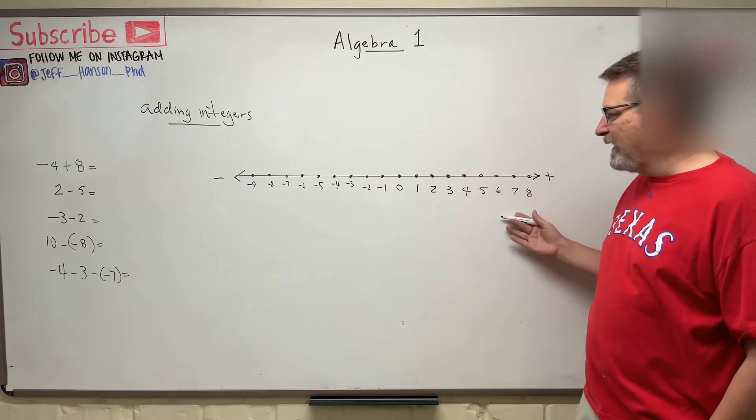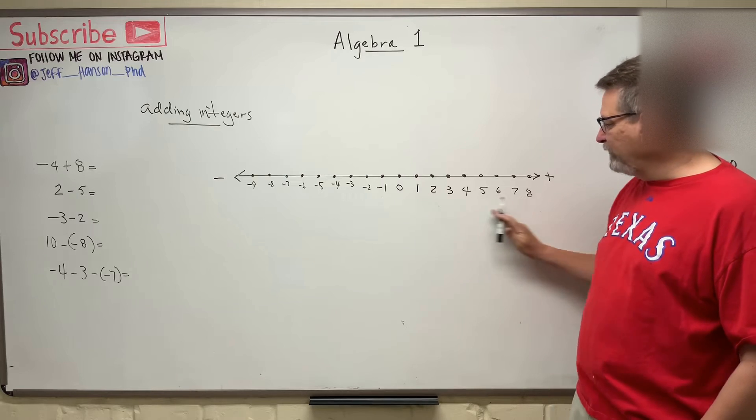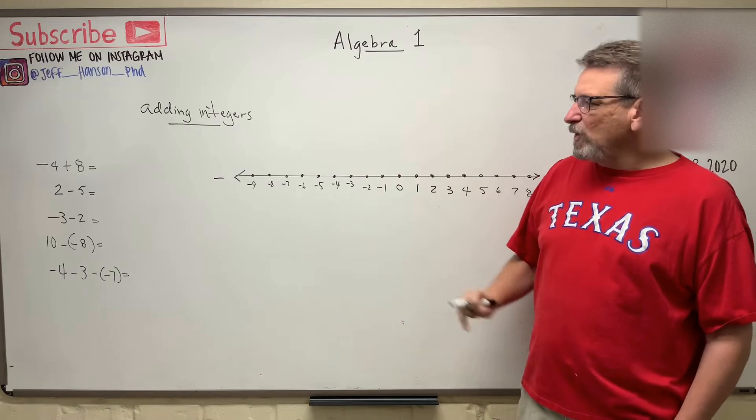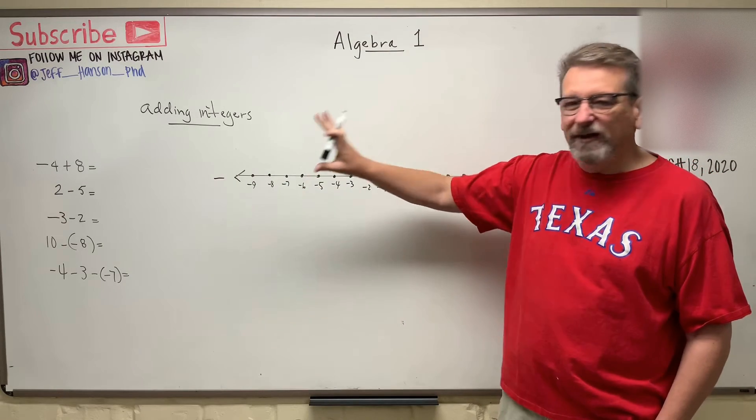What I have here is a number line. Here's zero, then I have positive numbers to the right of zero and negative numbers to the left of zero. So I have some simple examples over here, and let's see if we can work these.